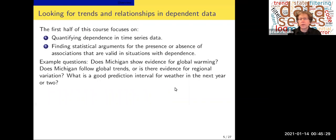So this course splits into two halves. In the first half of the course, we look at some fundamental tasks to do with time series. We want to quantify dependence in time series data, and we want to find statistical arguments for the presence or absence of associations that are valid in situations with dependence. And one of the examples we'll be following is, does Michigan show evidence for global warming? Does Michigan follow global trends? Is there evidence for regional variation? What's a good prediction interval for weather? Those are kind of time series questions, because weather evolves with time.